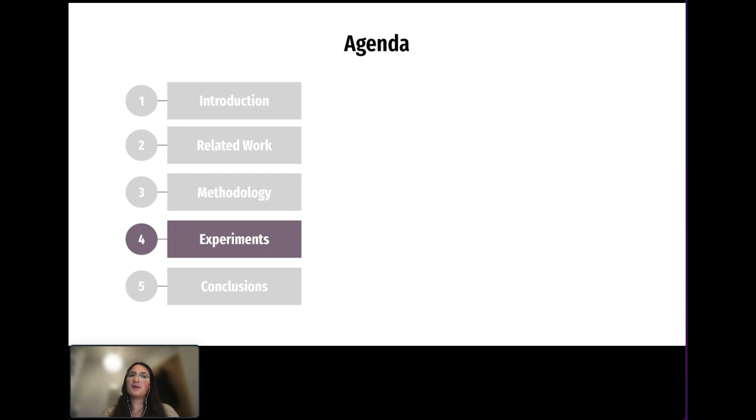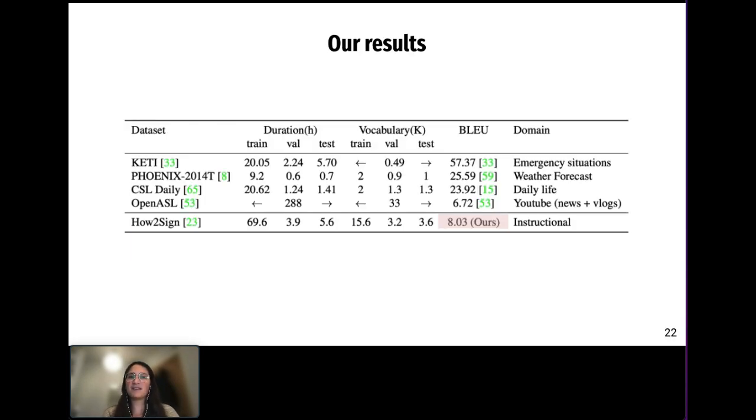So which kind of results did we obtain? In this work, we are proposing baselines, and the BLEU score that we achieve is 8. This is a low score, but it's comparable to OpenASL, a dataset of similar complexity.